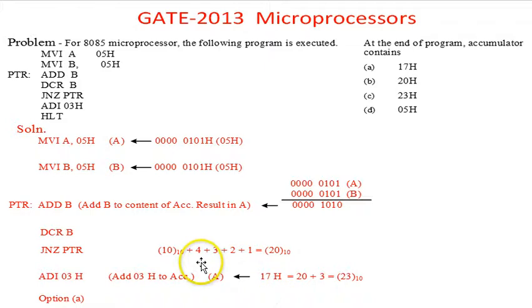Here we notice this is 10 in decimal was the initial content of the accumulator, then 4 is added in first iteration, 3, 2, and 1. So 10 plus 4 plus 3 plus 2 plus 1 makes 20 in decimal.